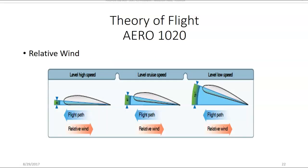Another term you need to know is relative wind. Relative wind is the direction of the wind as it hits the aircraft flying through the air. The angle between the relative wind and the chord line of the airfoil is known as the angle of attack. The chord line is another term you should remember — it runs from the leading edge of the airfoil back to the trailing edge. So the angle between the chord line and the relative wind is known as the angle of attack.